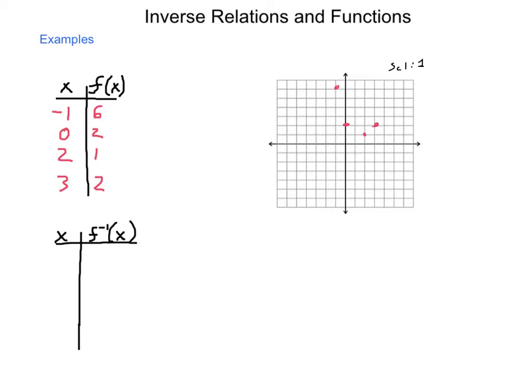Let's take a look at what the inverse would be. Just like we did before, we're going to take our input and output values and trade them. So we'll have 6, negative 1; 2, 0; 1, 2; and 2, 3 as my points. All I did was I took my inputs and outputs and had them trade locations. Now plotting this graph, we have 6, negative 1; we have 2, 0; we have 1, 2; and we have 2, 3.